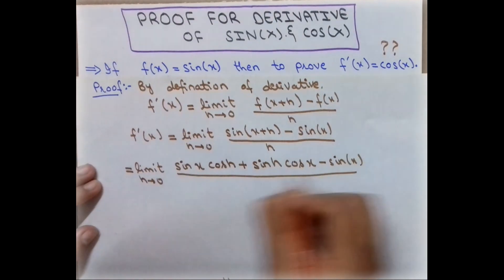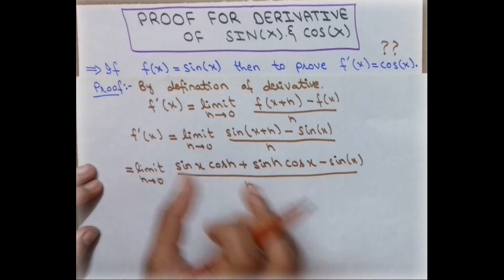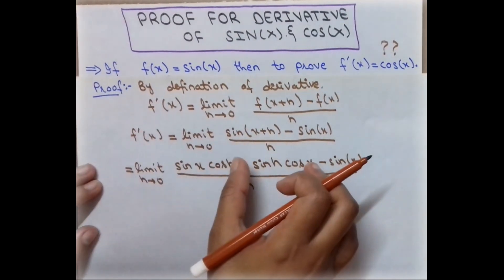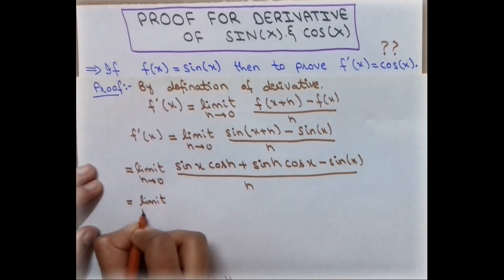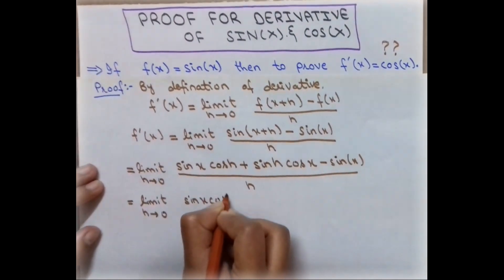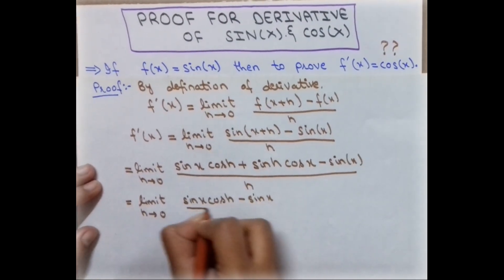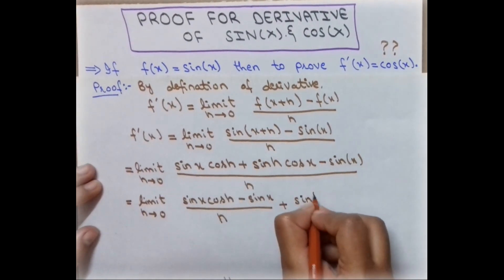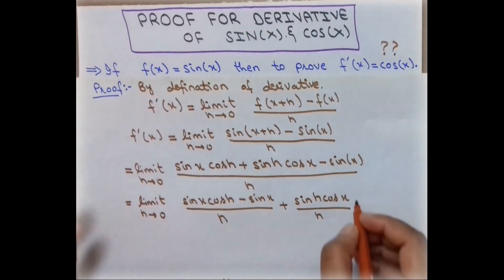We notice that sin(x)cos(h) and minus sin(x) share a common factor of sin(x). We combine those two terms and separate the expression, writing: limit as h approaches zero of [sin(x)cos(h) minus sin(x)] over h, plus sin(h)cos(x) divided by h.